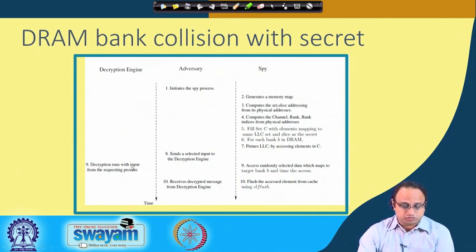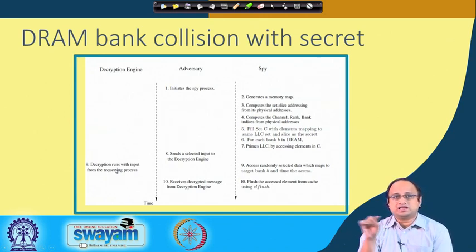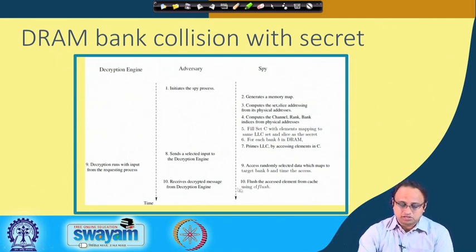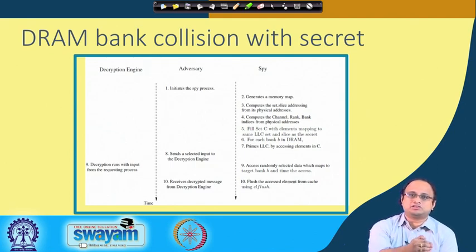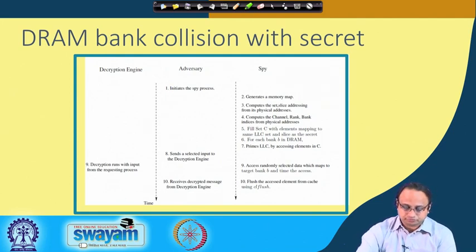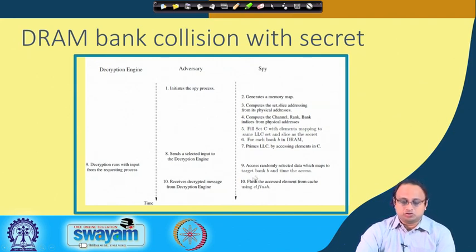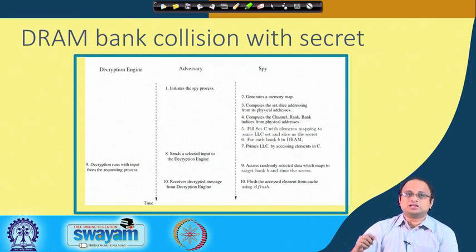When the decryption runs, it accesses the two cache lines we discussed, but this access is done from DRAM rather than from cache, because the spy has evicted that address space from the cache. In parallel, you access randomly selected data which maps to the target bank B (e.g., bank 0), and you time your accesses. The objective is that as a spy you are accessing the same bank as the decryption process, but you want to access an adjacent row rather than the same row.